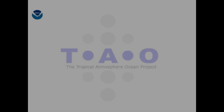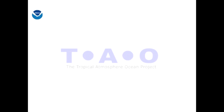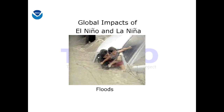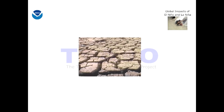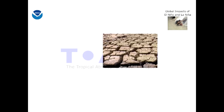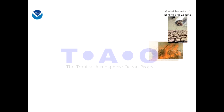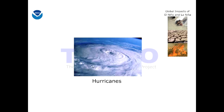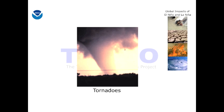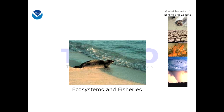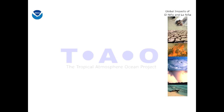El Niño and La Niña have important consequences for weather around the globe, including floods, droughts, wildfires, hurricanes, tornadoes, ecosystems, and fisheries.